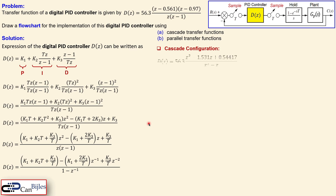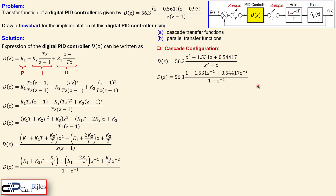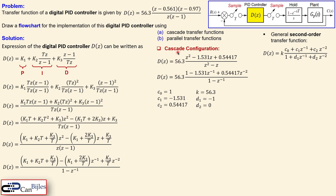For the cascade configuration first: we start with our transfer function, work out the parentheses for z² minus z in the numerator, then divide by z² to get the standard form. The general second-order cascade transfer function has coefficients c0, c1, c2, d1, d2, and gain k — that's five coefficients, with k equal to 56.3 in this case. For our PID controller, c0 is 1, c1 is −1.531, and so on.